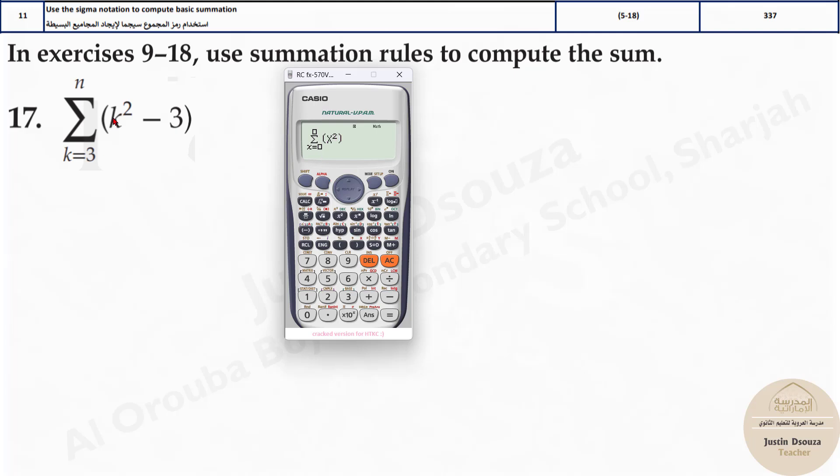Alpha x squared. Why I put x instead of k? Because k is the limit over here. x squared minus 3. It starts at k equals 3 and ends at n, which I do not know. But I'll just assume a number. Don't assume a big number. Don't take 100 or something. I will just take over here, say, 20.